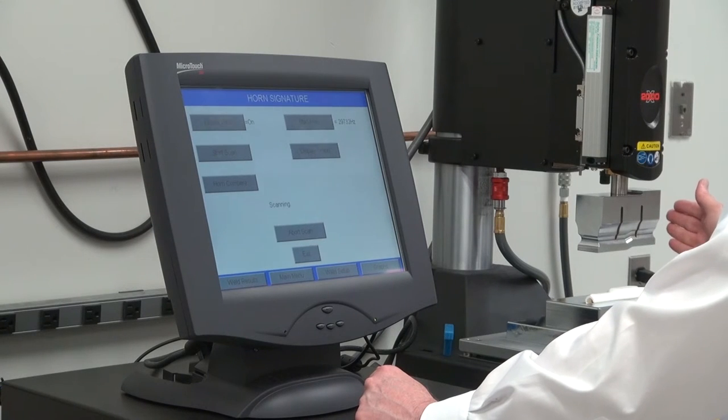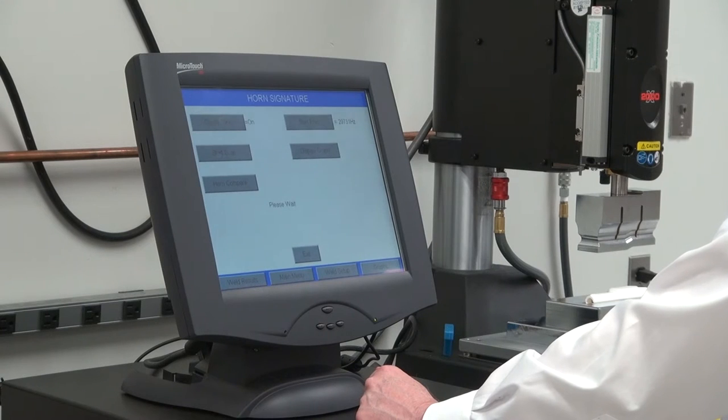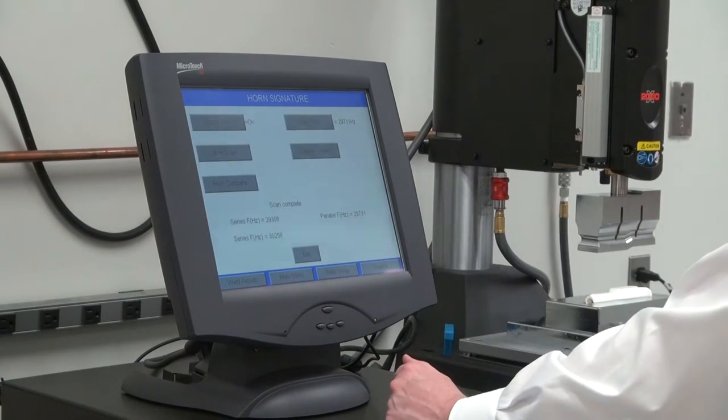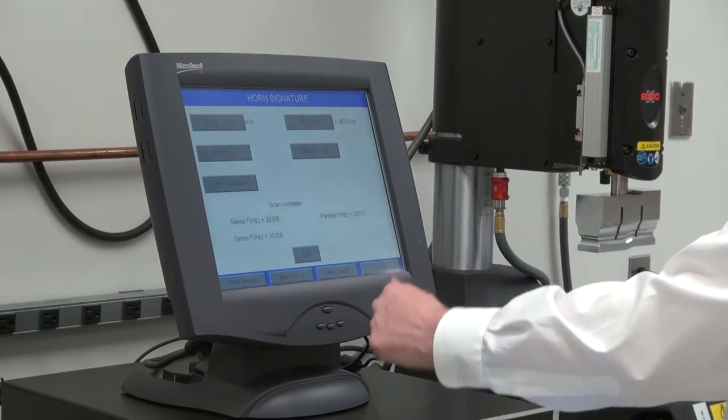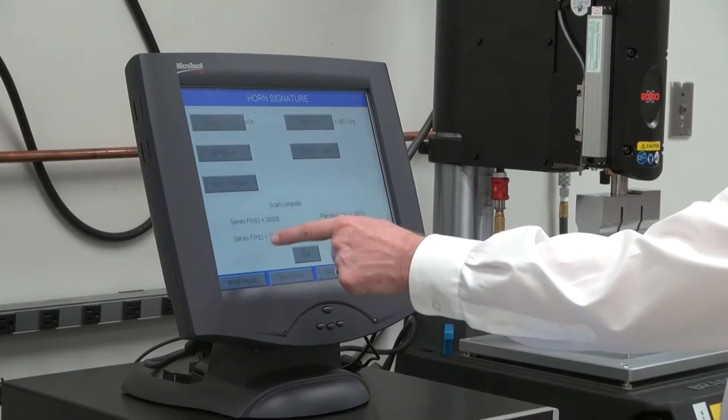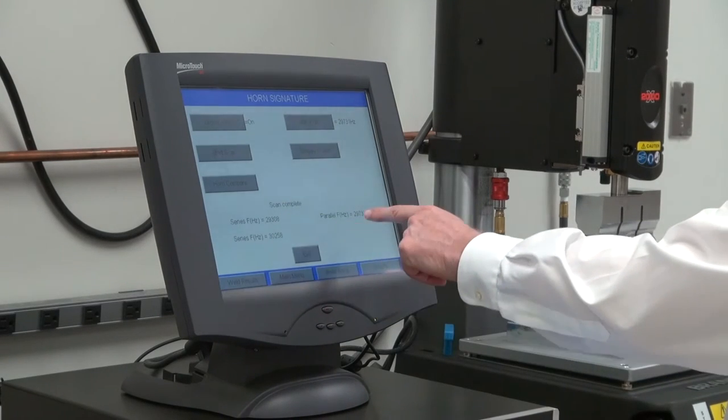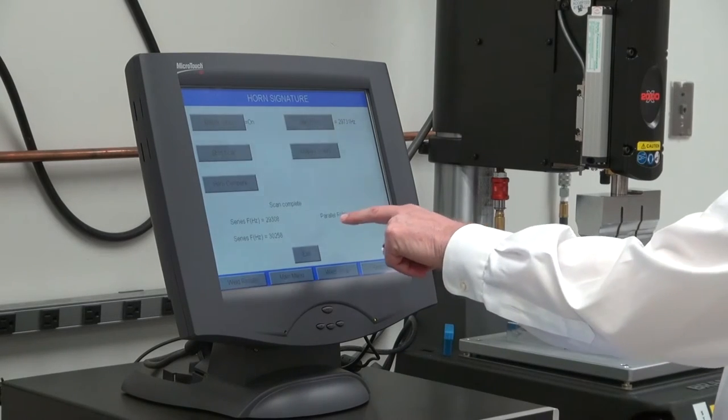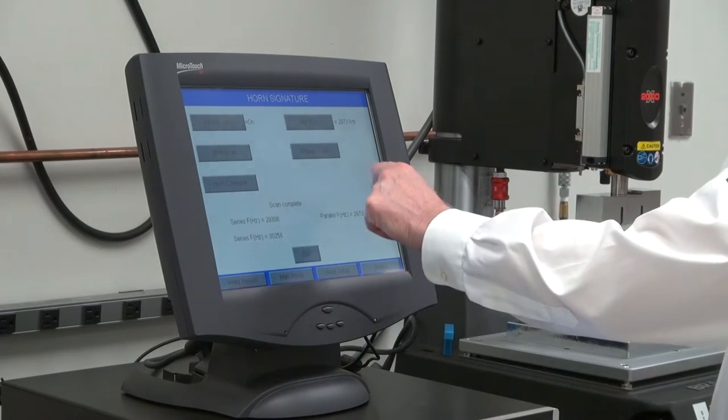It's going to find the best frequency in that range to run at and store that. So it gives me here the numbers that I've found for the frequencies. There are three frequencies in this horn within this range: two series frequencies and one parallel frequency that's between the two series. The parallel frequency is the one you're going to run at.